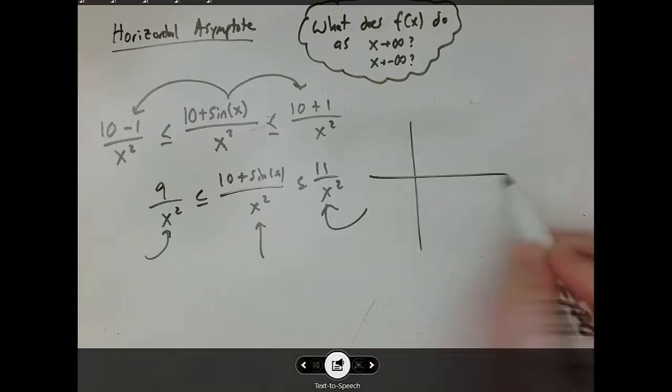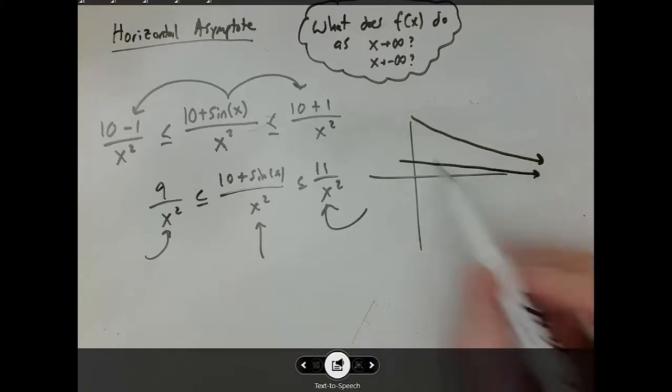So you've got a situation where you've got something approaching zero, you've got something else approaching zero, and you've got your sine function that's always in between. So you know that it also must be approaching zero. This kind of argument is called a sandwiching argument. Or more recently, I believe it's referred to as the squeeze theorem, which is something that you'll see in maybe week two of calculus next year.